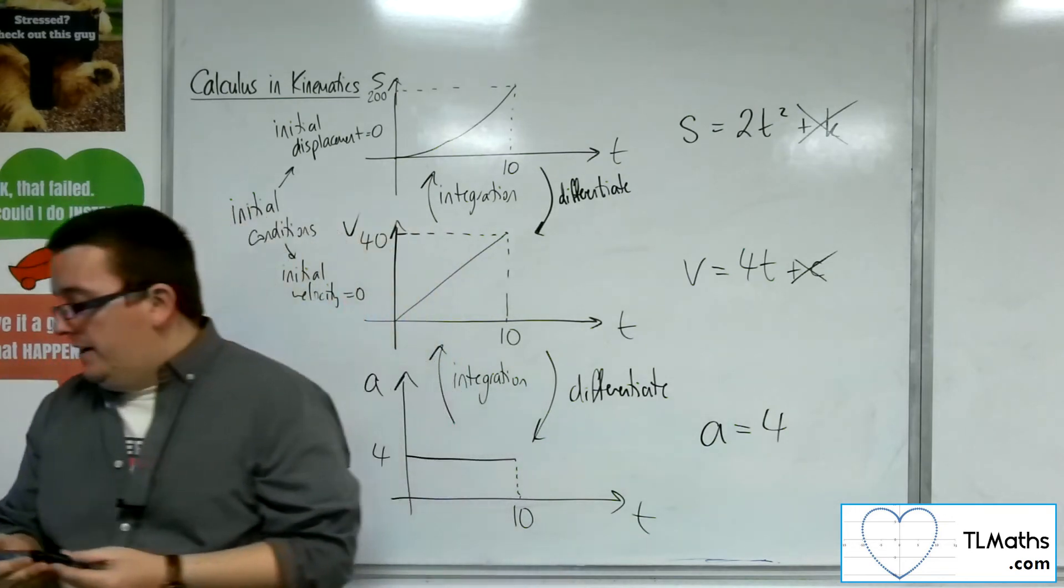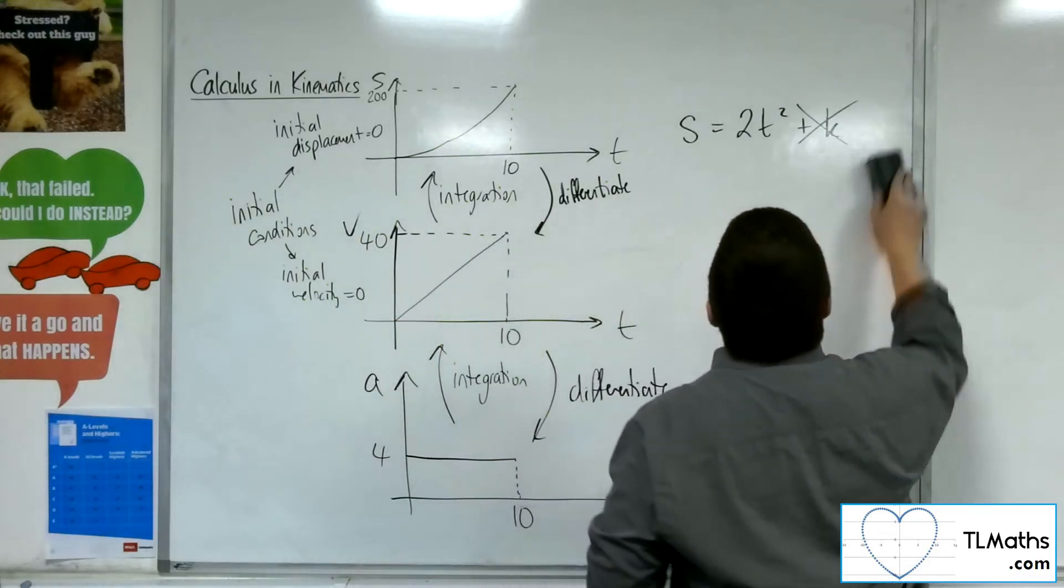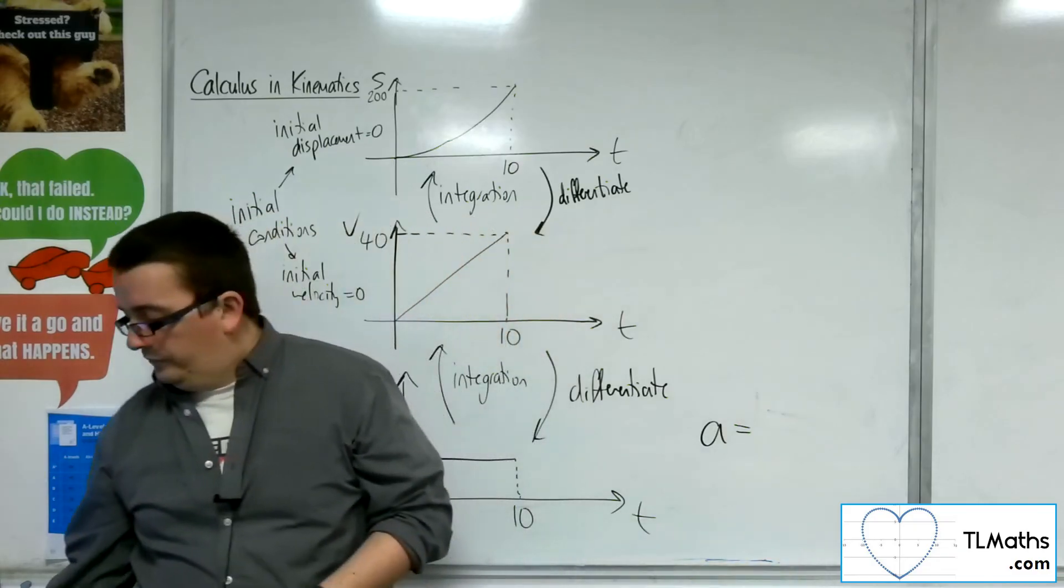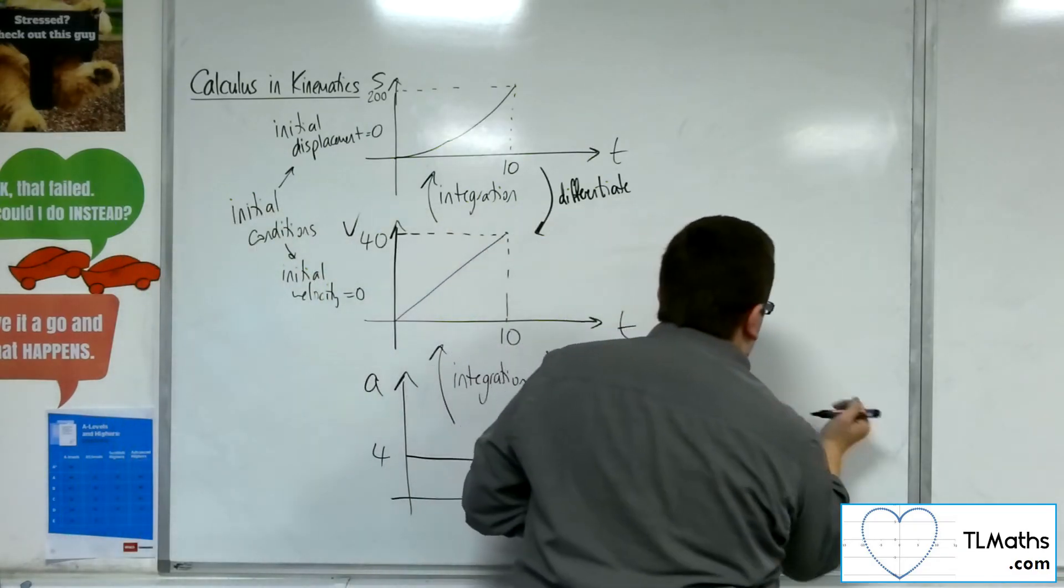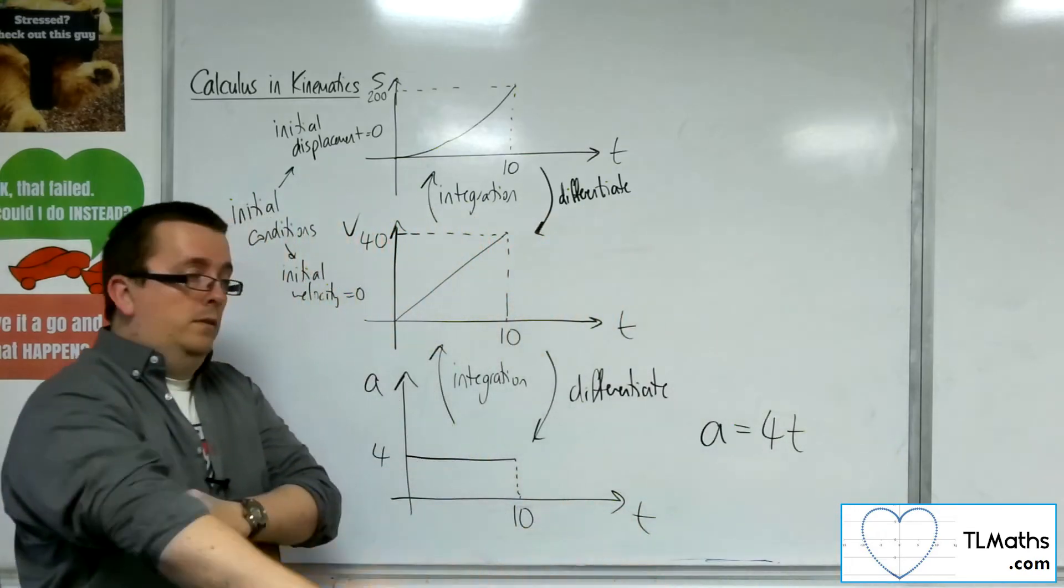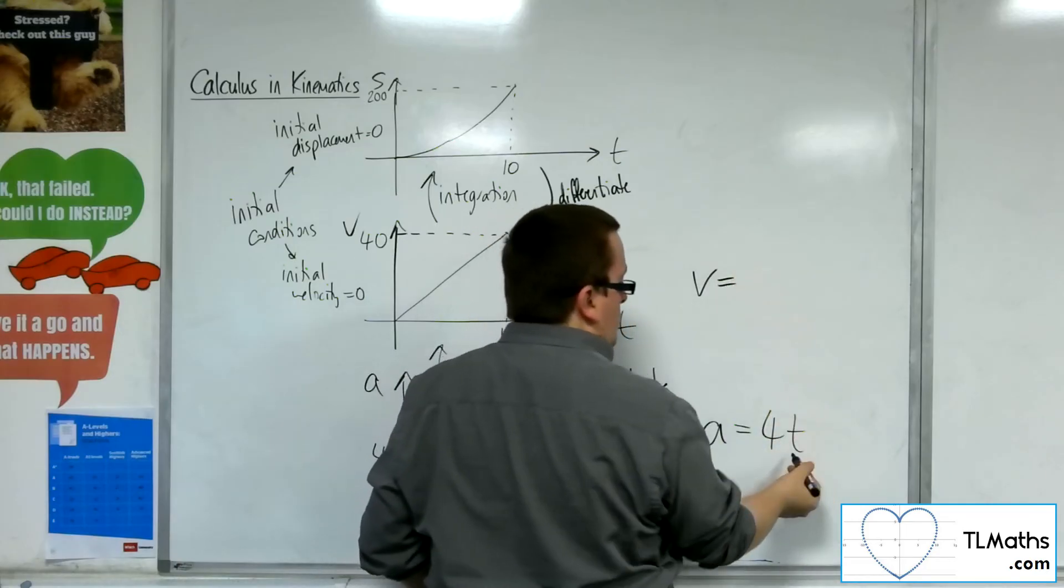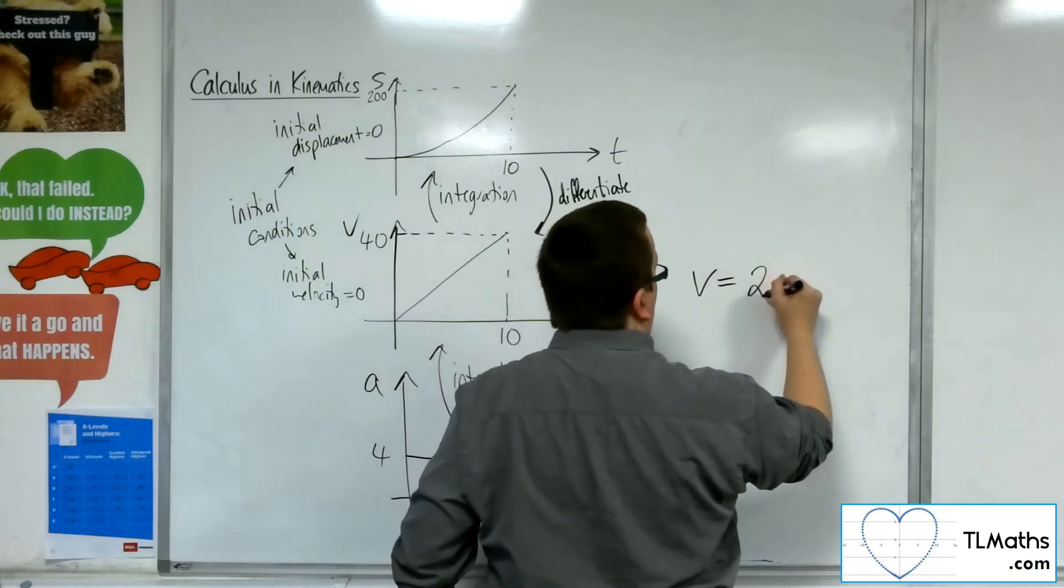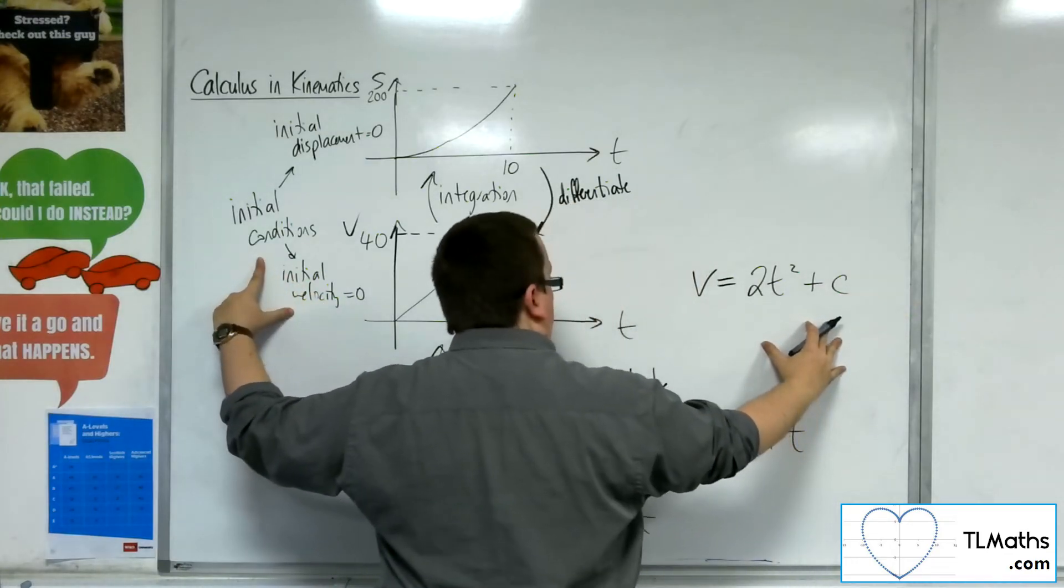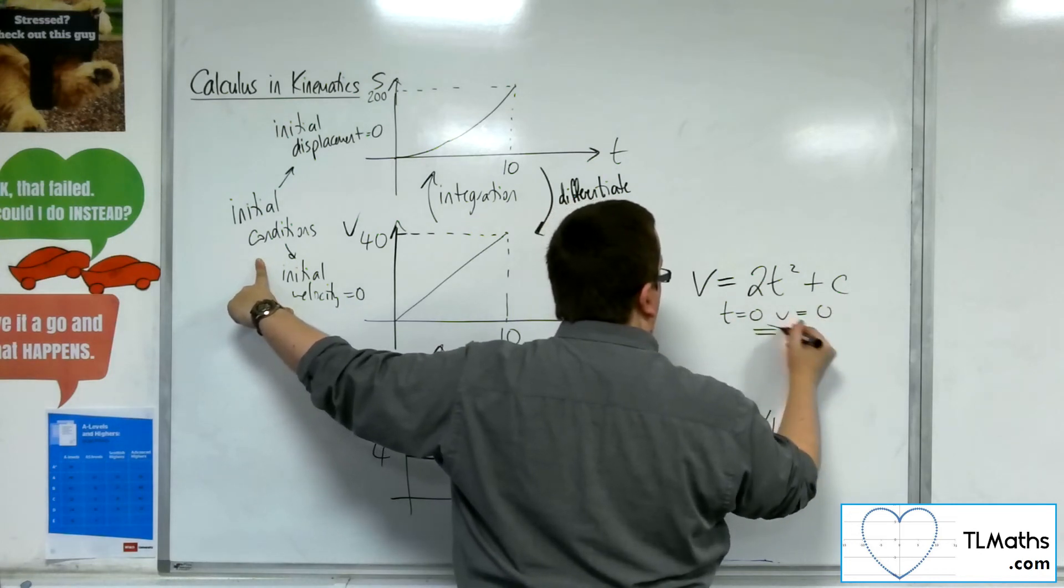And as I said, if we can now change the acceleration to something that isn't constant, so let's say it's 4t instead of just 4, then when I get to the velocity, I'm going to integrate this. So I'm going to get 2t squared plus c. Substitute in the initial condition of the initial velocity. So when t is 0, v is 0, and so c is 0.